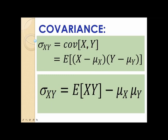Covariance of two random variables x and y can be computed using this formula. Sigma xy is the standard notation for covariance. Covariance of x and y is equal to the expected value of the product of (x minus mu of x) times (y minus mu of y). The second equation is the computational formula: sigma xy is equal to the expected value of x times y minus mu of x times mu of y.